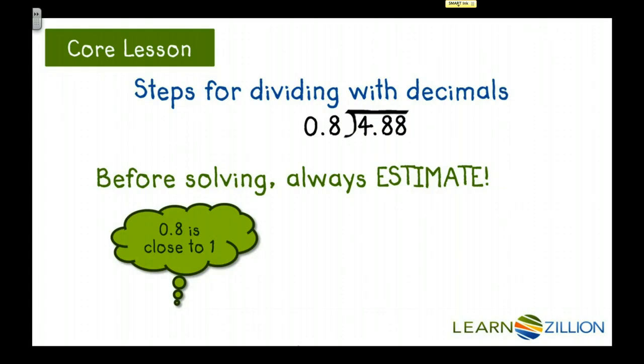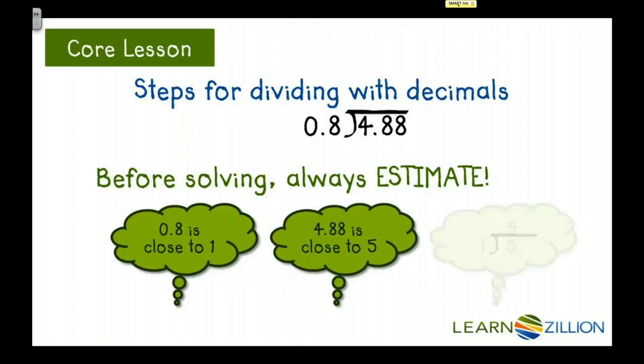We know that 0.8 is close to 1, and that 4.88 is close to 5, and that 1 goes into 5 five times. So our answer should be somewhere around 5.